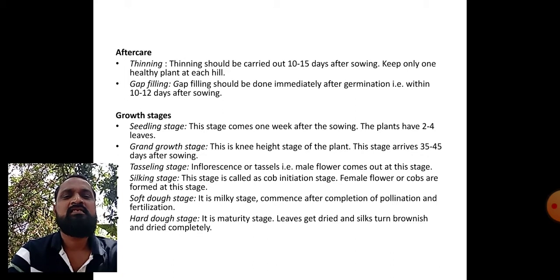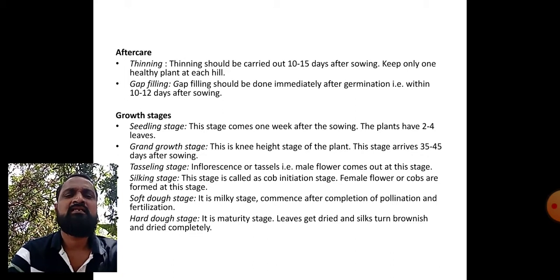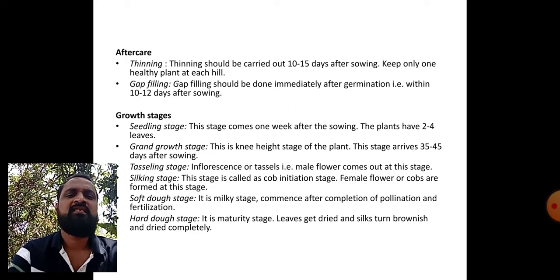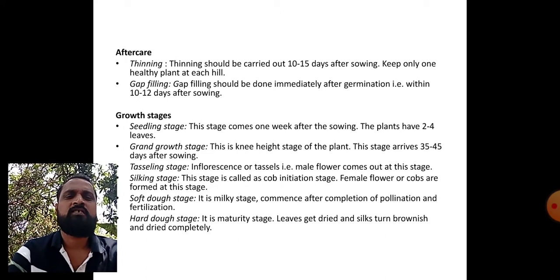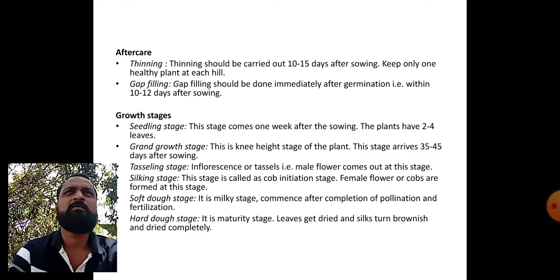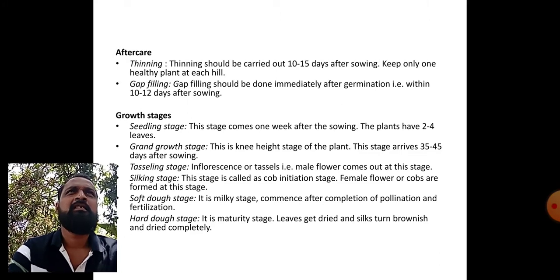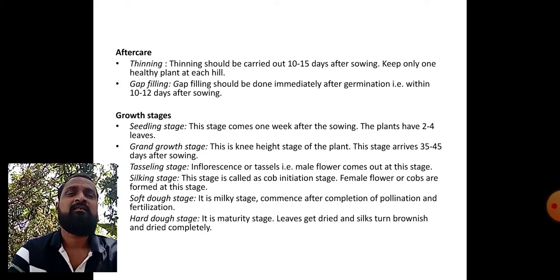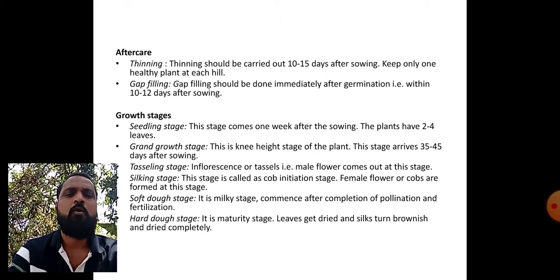Soft dough stage is a milky stage that commences after completion of pollination and fertilization. If we press the grains, a milky secretion comes out - that is why it is known as soft dough stage. During this stage, high protein content is present in the cob.